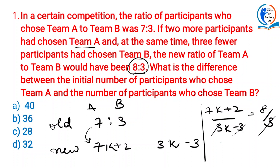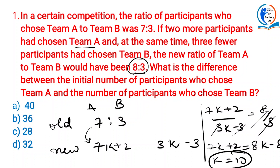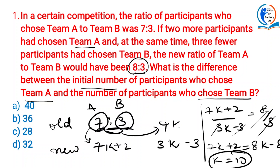The 3s cancel. So you get 7k + 2 = 8k − 8, because (k − 1) is multiplied by 8. Therefore k = 10. Now, what are they asking? The difference between the initial number of participants who chose team A and team B. Team A is 7 parts, team B is 3 parts, so the difference is 4 parts, that is 4k. So 4 × 10 = 40. A is the answer.